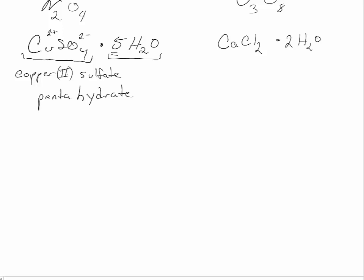And we would say pentahydrate. So what would CaCl2·2H2O be? This is calcium chloride dihydrate. And why is it not necessary to specify charge with the calcium? Because calcium is a group 2 metal, it's always going to be 2+ in compounds.